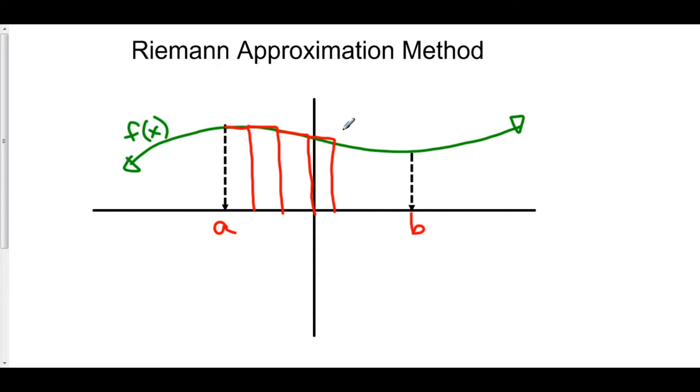And another rectangle. And another one. And another one. And finally here's our last rectangle right here. So we have one, two, three, four, five, six, seven. So here we have broken up the region from a to b into seven different partitions.